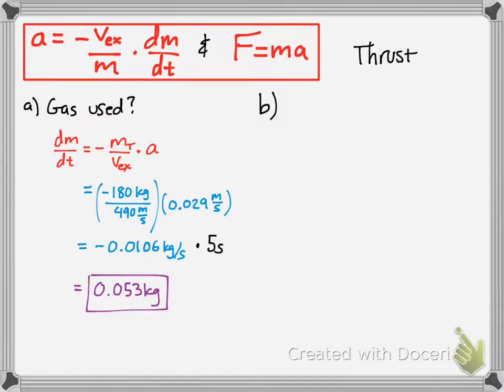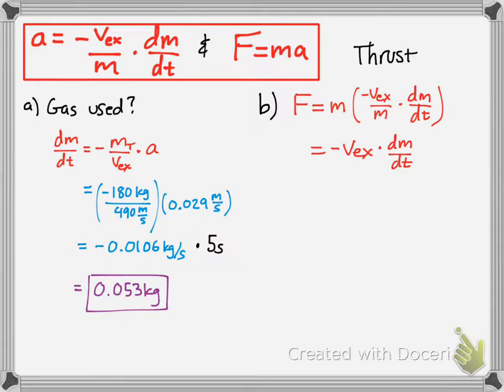The second part asked how much thrust was resulted. So, thrust meaning force, and force is equal to mass times acceleration. Acceleration will simply plug in the acceleration rocket propulsion equation for the acceleration portion. Now, notice how the m's will cancel. So, that's why we were just given this. That's why the equation ends up to be like this.